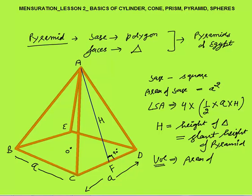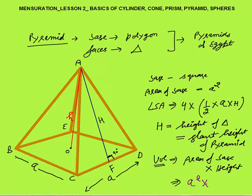Volume of pyramid is area of base × height, same as for cylinder. But here the height is not the slant height — height is the actual height of the pyramid, AO, which is the vertical distance from the center of the base to the top. Volume is (1/3) × a² × h (with a factor of 1/3), where small h is the height of the pyramid. In this way you can calculate all the formulas related to pyramid.